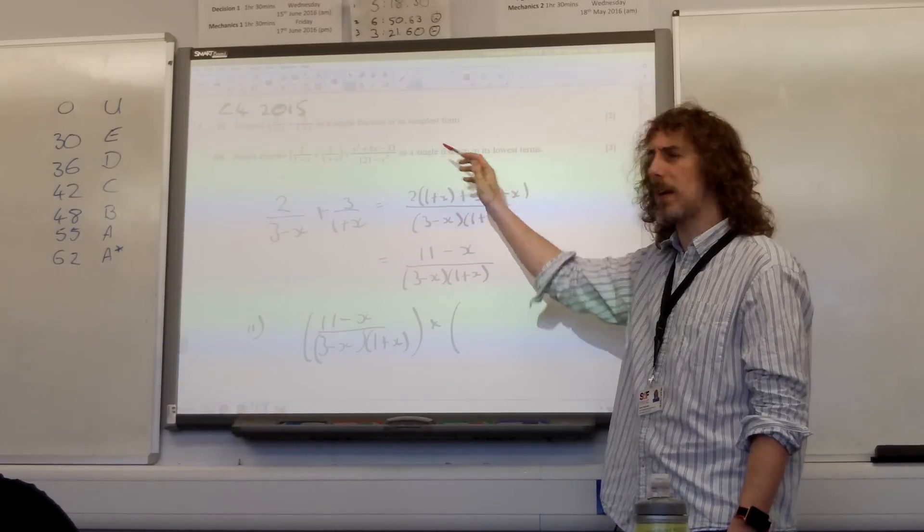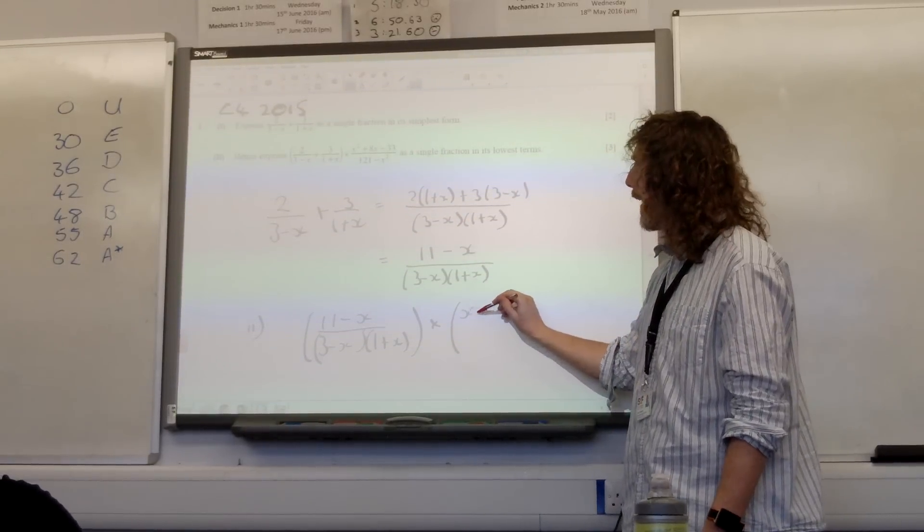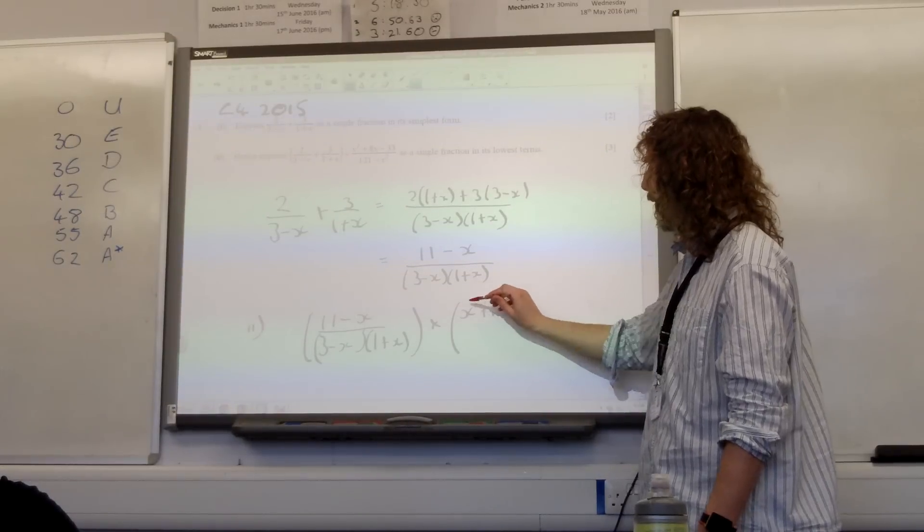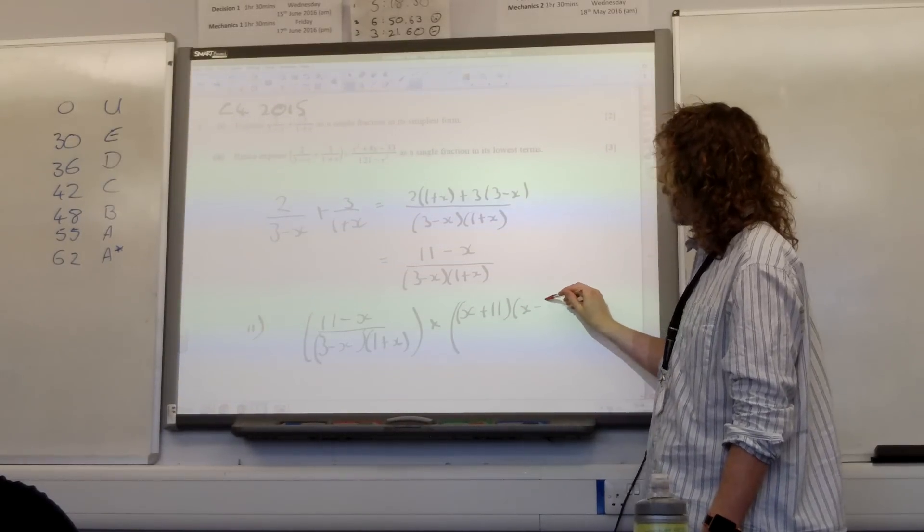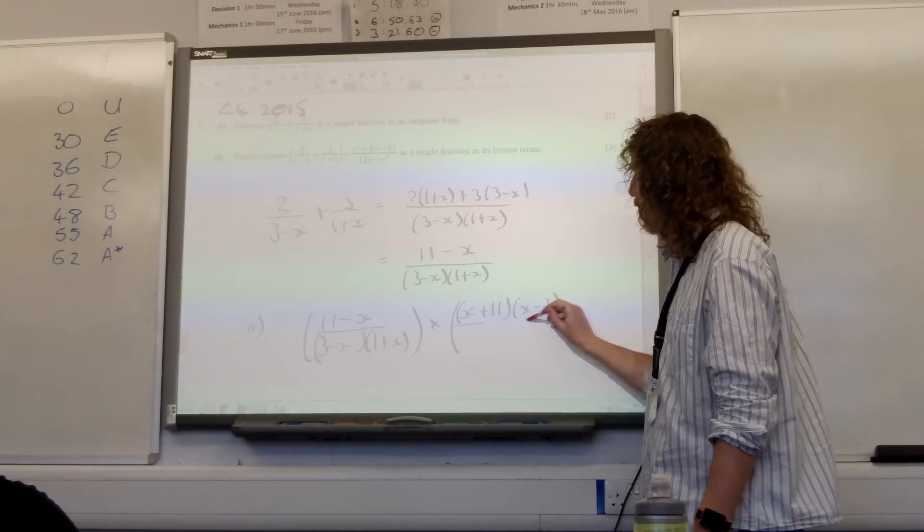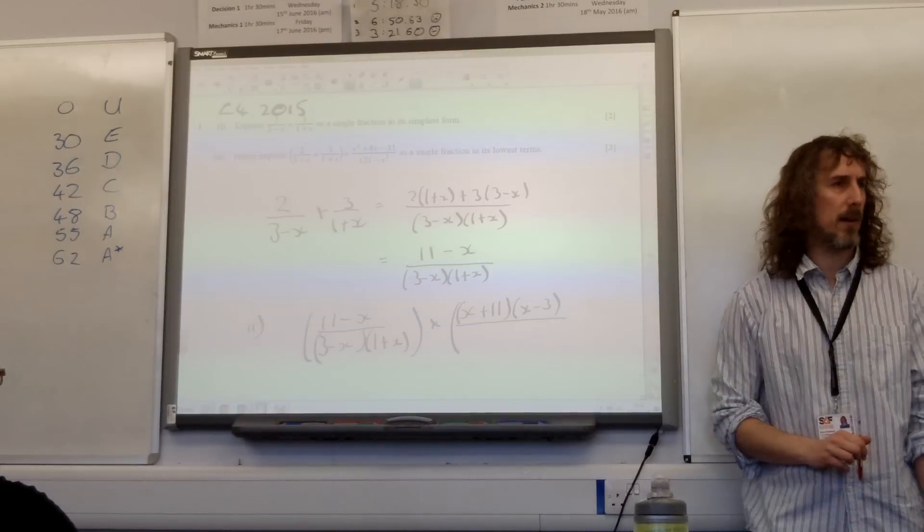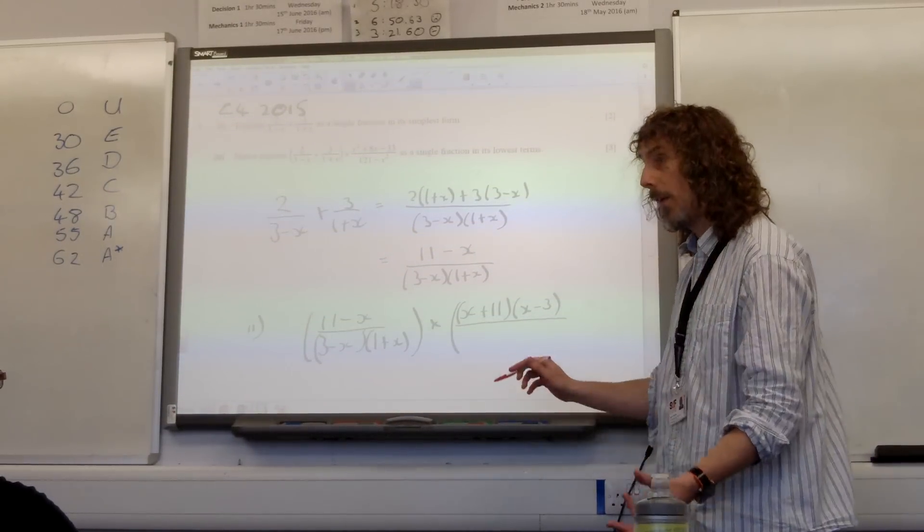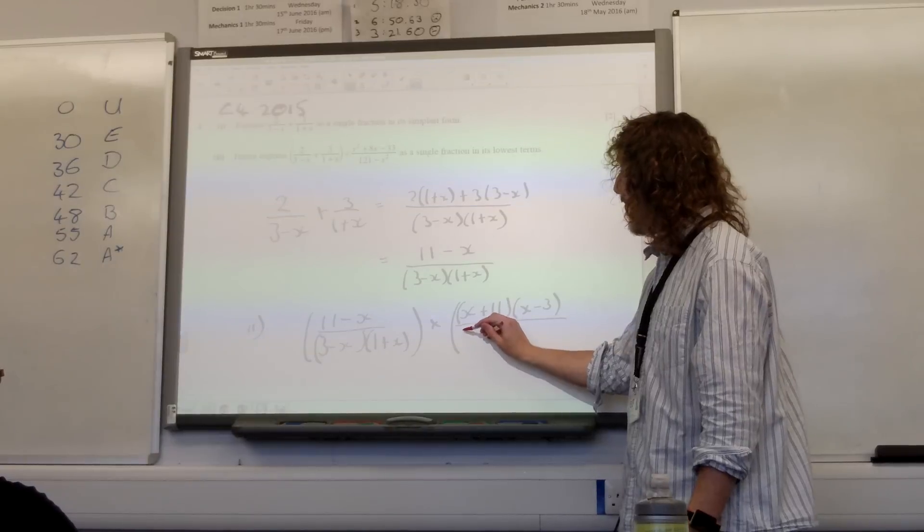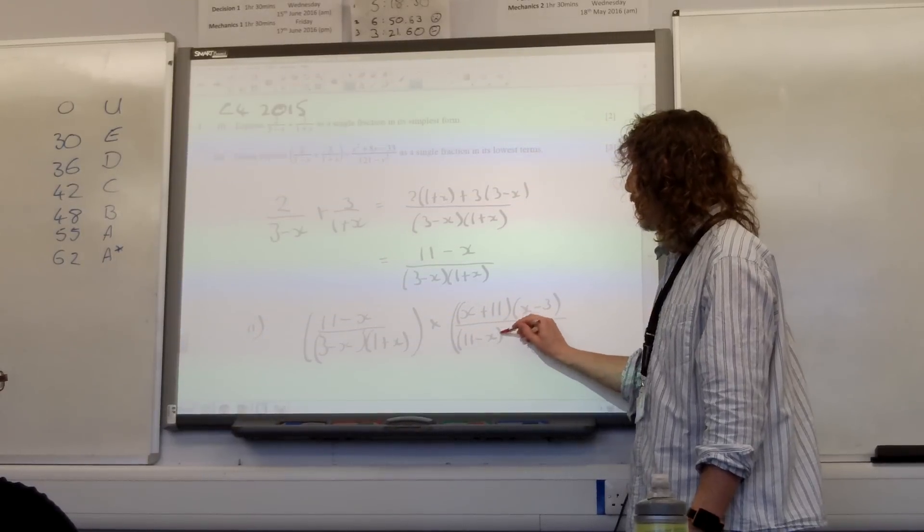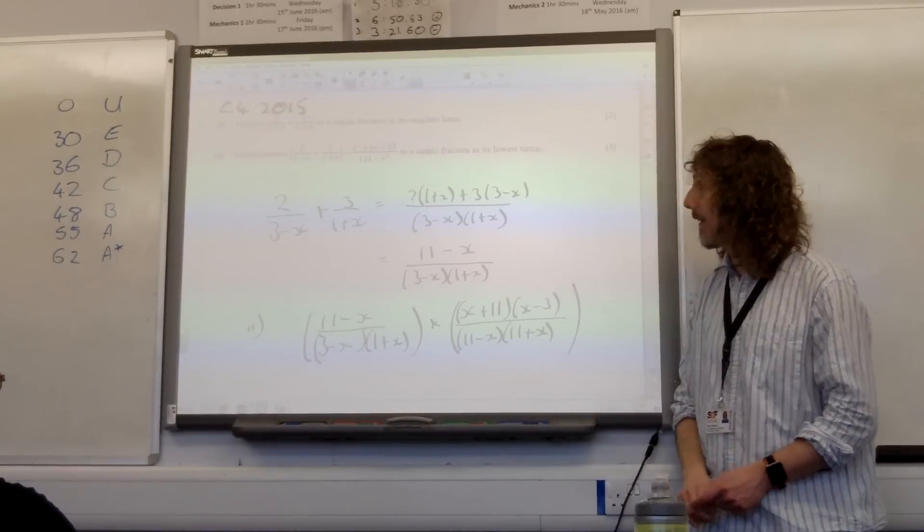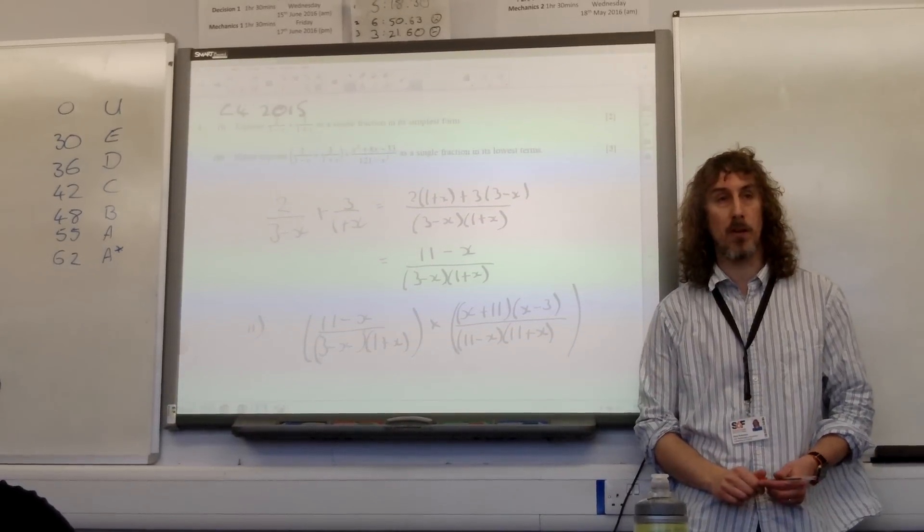So multiplying 3 is 11 into 3, so that must be x, what would be x plus 11 times x minus 3. Does that work? Yes. That's it factorized correctly. The bottom line is the difference of two squares, isn't it? It's 121 taking away x squared, so that's 11 minus x times 11 plus x. So the big thing there was to factorize as much as you possibly could.